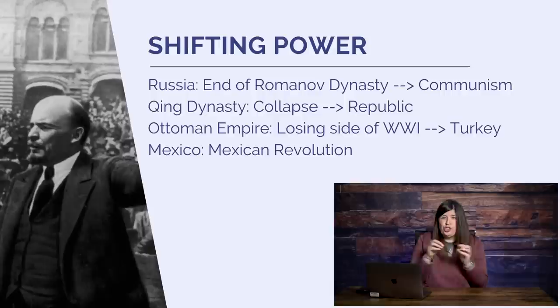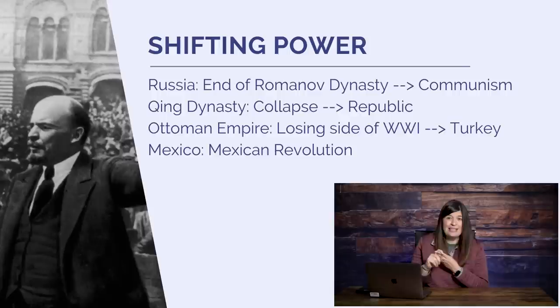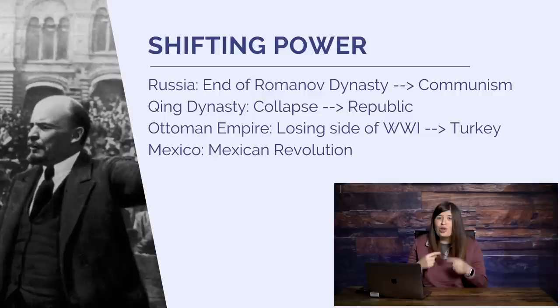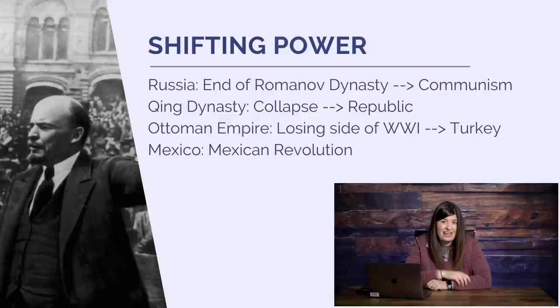All of this leads to the first part of the unit, which focuses on shifting power. There were a lot of people unhappy with their authoritarian governments — specifically Russia, the Qing Dynasty in China, the Ottoman Empire, and Mexico. Within Russia, the denial of basic rights, the loss in the Russo-Japanese War, struggles to industrialize, and massive losses in World War I led the Bolsheviks, Vladimir Lenin, and the working class to revolt and overthrow the Romanov dynasty. They set up a communist regime in 1917.